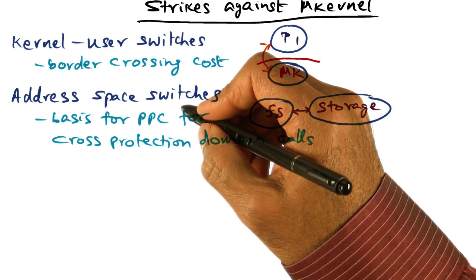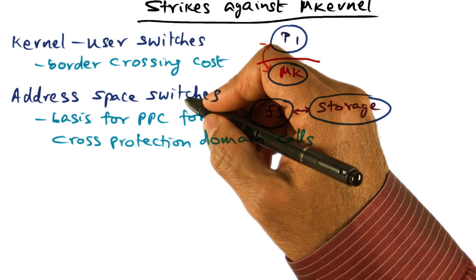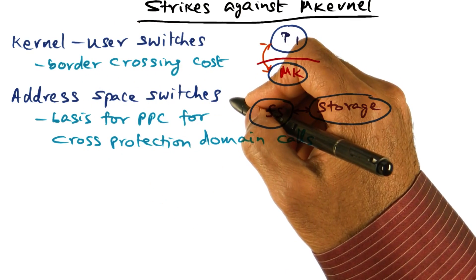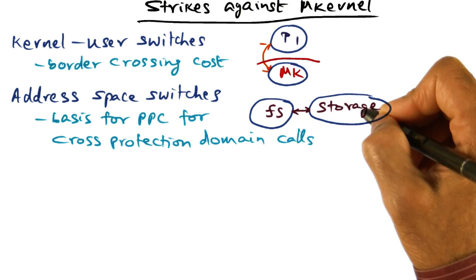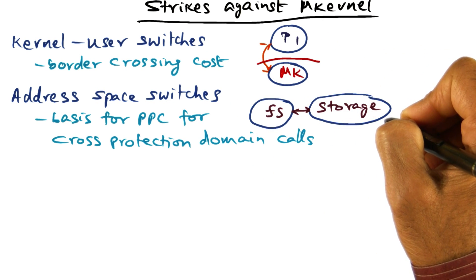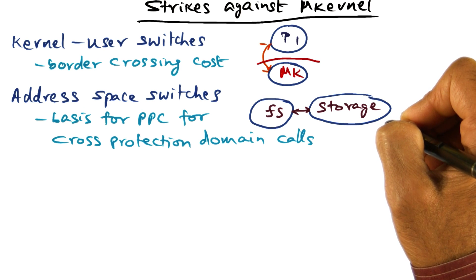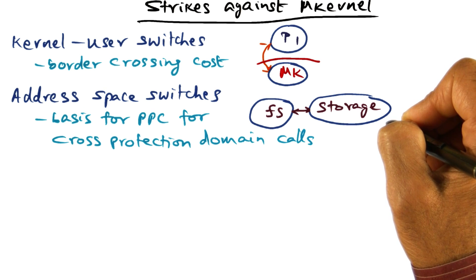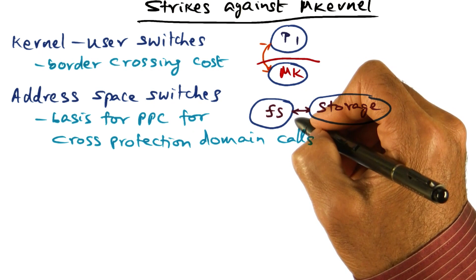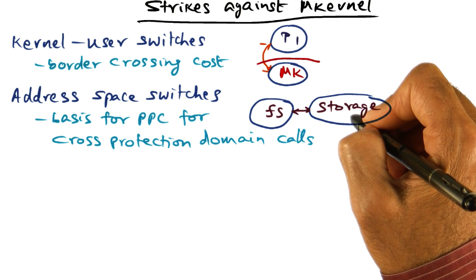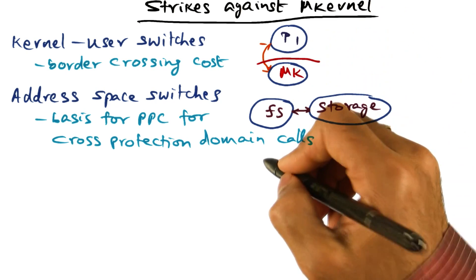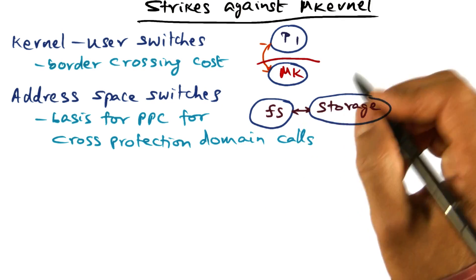The second strike against a microkernel-based design is address space switches. With the assumption that each system service is living in its own hardware address space, whenever an application needs any system service, that may involve the servers living above the microkernel having to talk to one another in order to provide that particular service requested by the application.